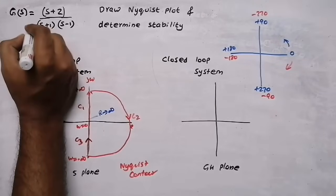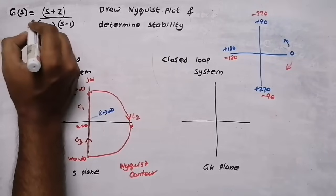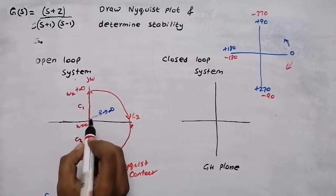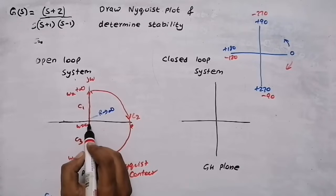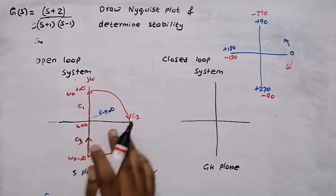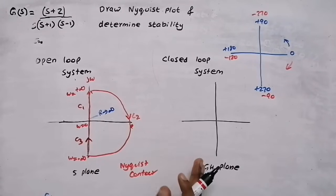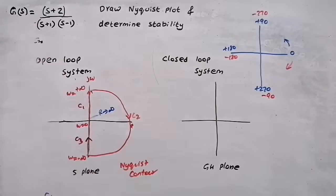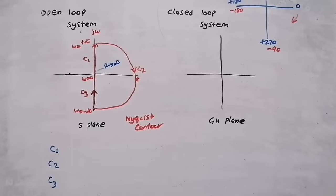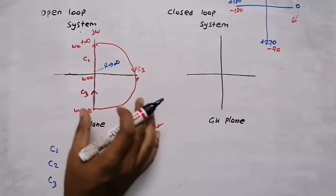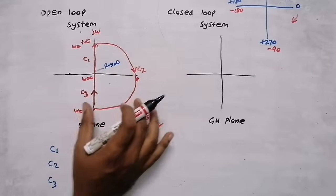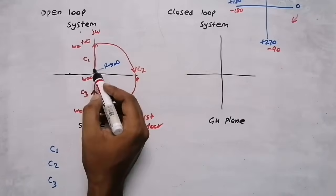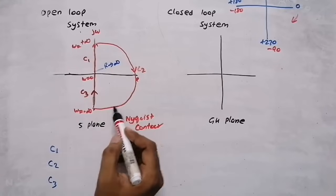If there is a pole at the origin, giving S equal to 0, there will be a slight difference in the Nyquist contour — I will discuss that in the next video with a problem where there is a pole at the origin. This Nyquist contour consists of three regions: C1, C2, and C3.